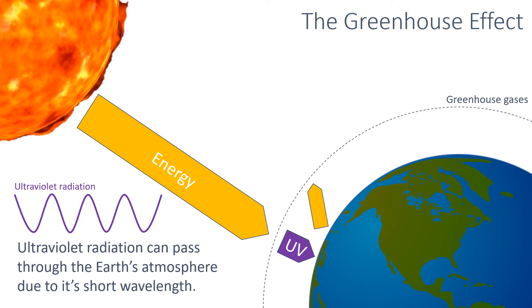Some of the energy produced from the Sun, such as the ultraviolet radiation, has a short wavelength. This means it can pass through the greenhouse layer without interacting with the molecules.